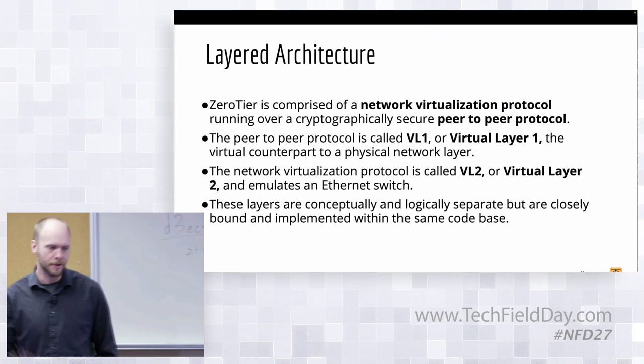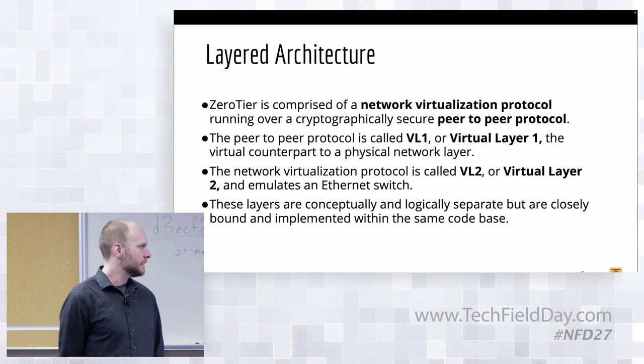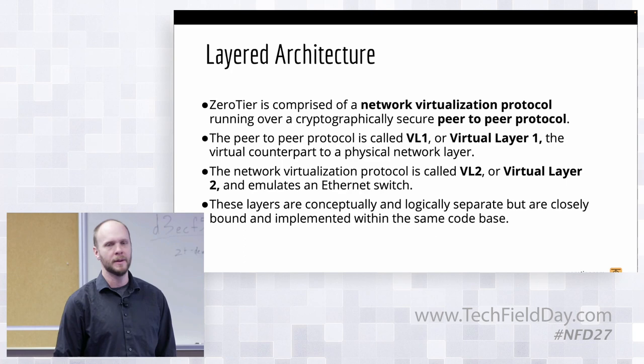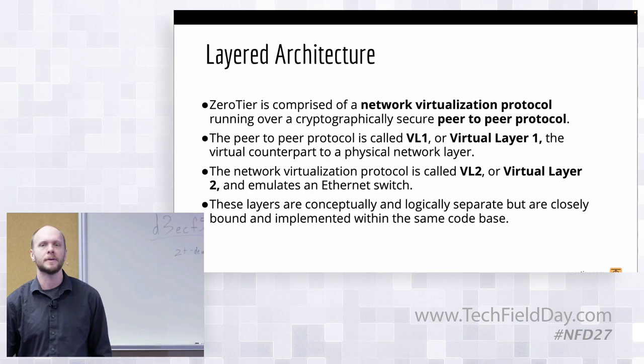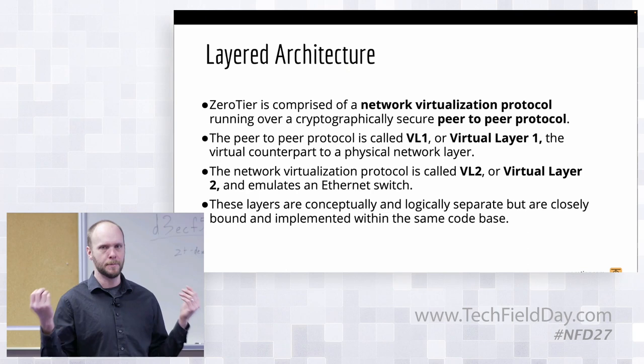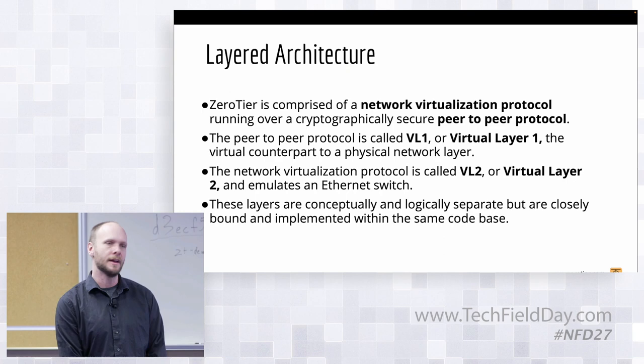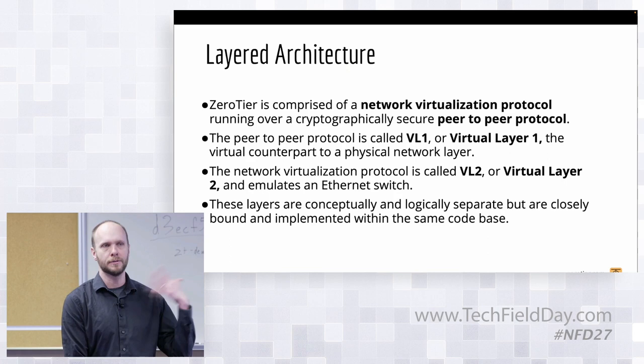So it is a layered architecture. In a previous section, I actually went over this at a high level. ZeroTier's organized into two layers internally. These are logically separate, but they're implemented as part of the same code base internally, so they play nice together. There is a network virtualization protocol running over a peer-to-peer protocol. So the peer-to-peer protocol takes care of moving packets back and forth between nodes, and that's its job. It also takes care of encryption, authentication, and provides a cryptographic infrastructure that the next layer can use for authentication and security.